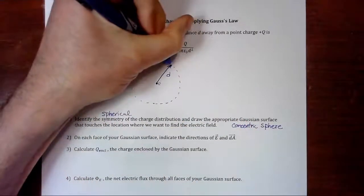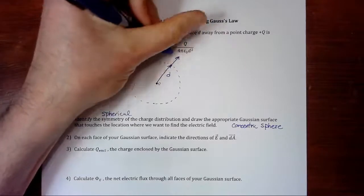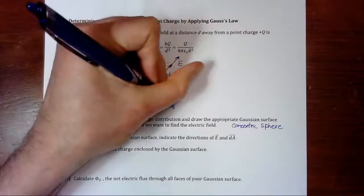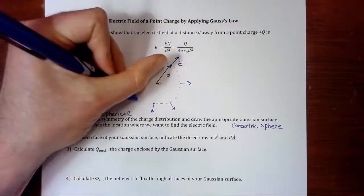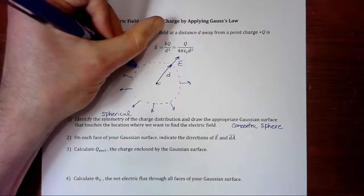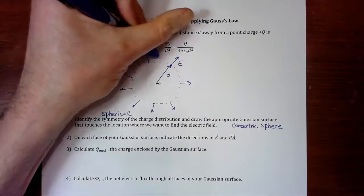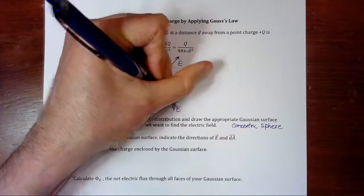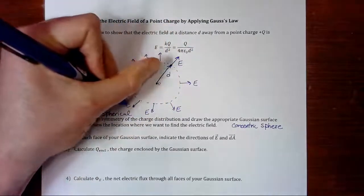And the electric field at d points outwards. And it does so at all of those places along the sphere. And the electric field is the same value at every place along the sphere. Right? Because of the spherical symmetry.